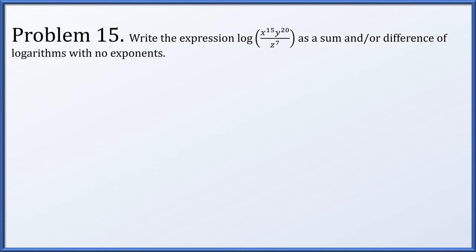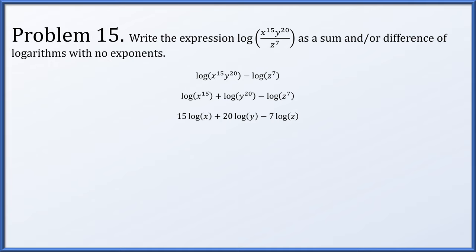Problem 15: write the expression — logarithm of x to the 15th times y to the 20th divided by z to the 7th — as a sum and/or difference of logarithms with no exponents on the terms inside. First, the logarithm of a quotient splits as a difference. The left term was a product, so it splits as a sum. Each term is now the logarithm of a single number to a power, and all those powers come out as scalar multiples: 15 log x plus 20 log y minus 7 log z.